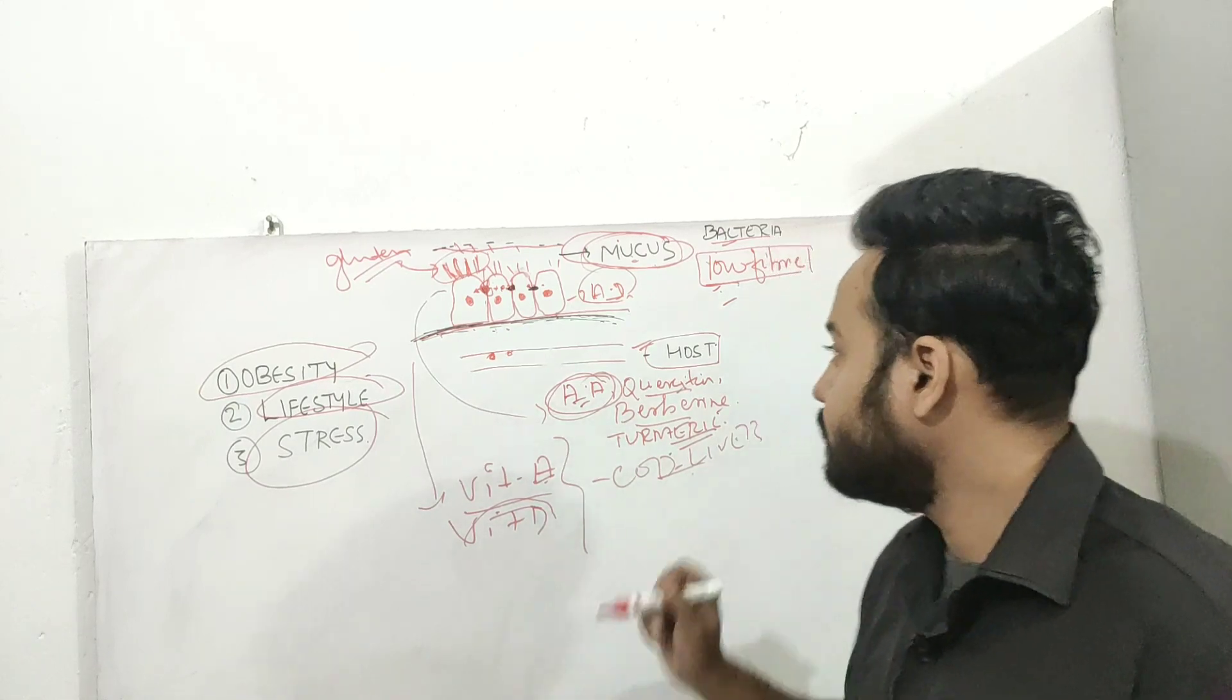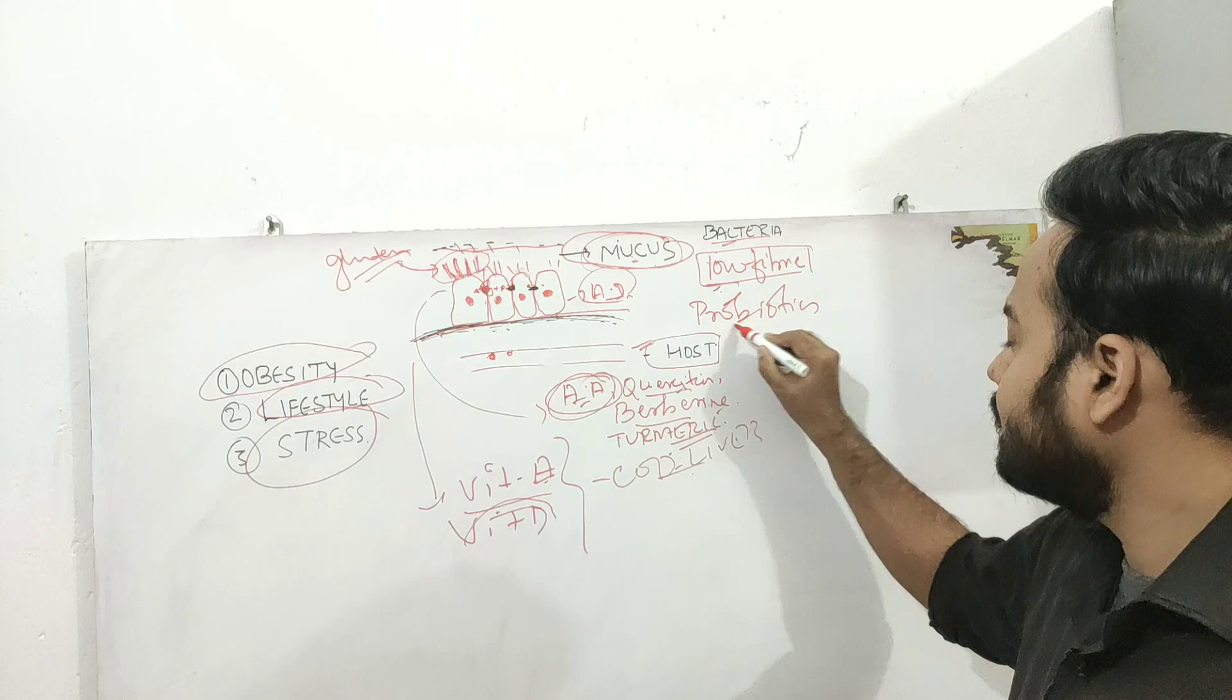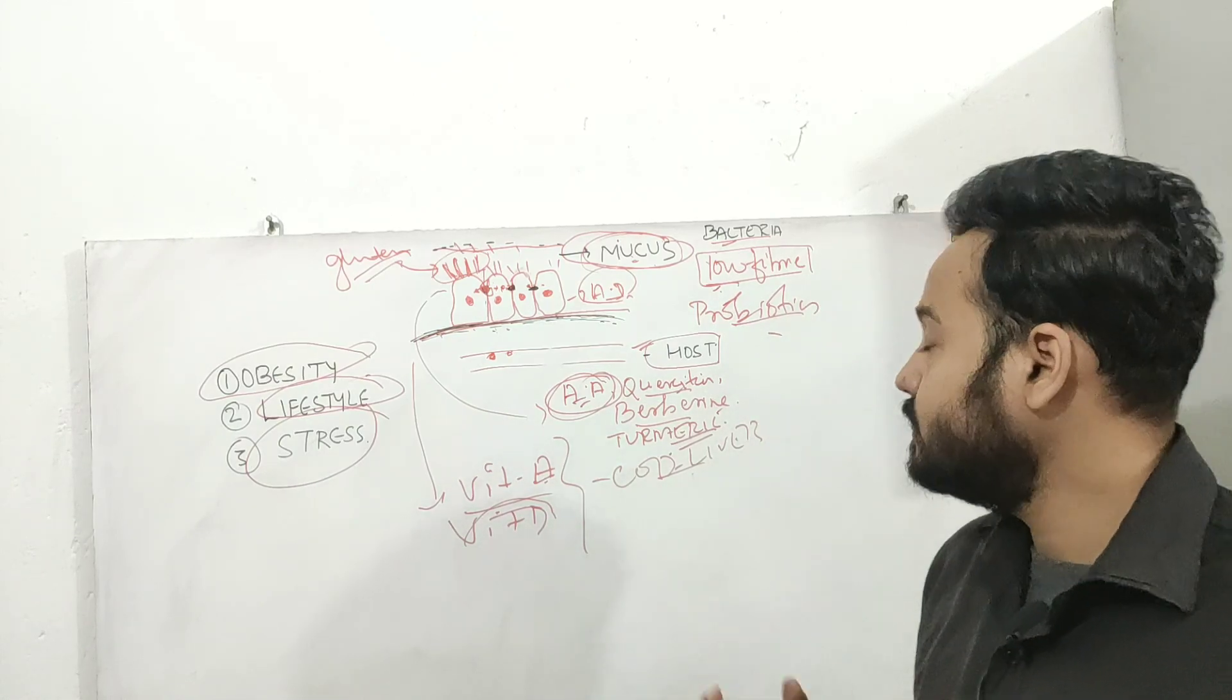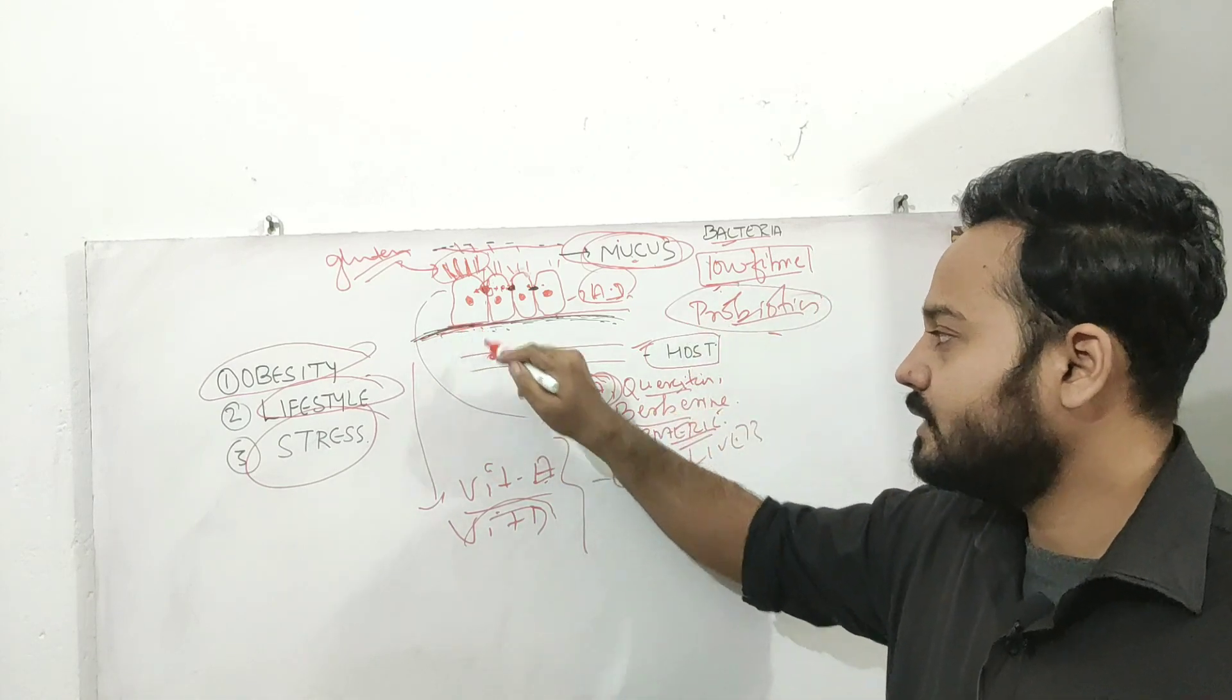Then there is role of probiotics. So probiotics, especially lactobacillus and bifidobacterium longum, these two strains of probiotics are extremely important to prevent leaky gut and to prevent increased intestinal permeability.